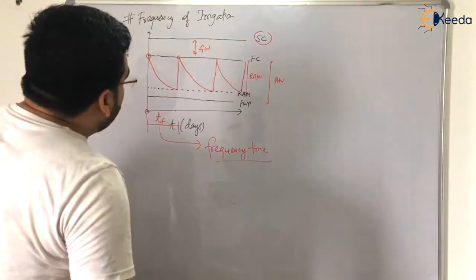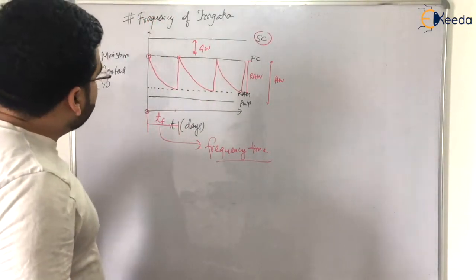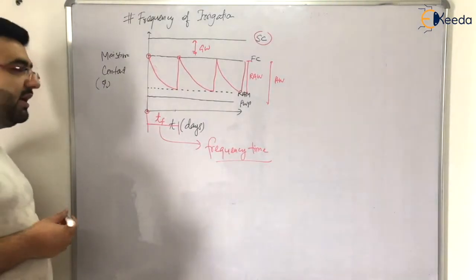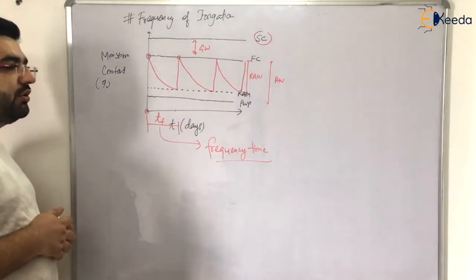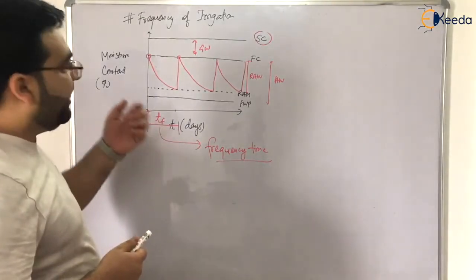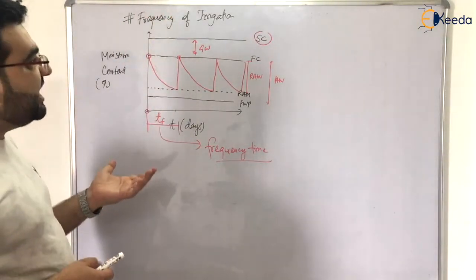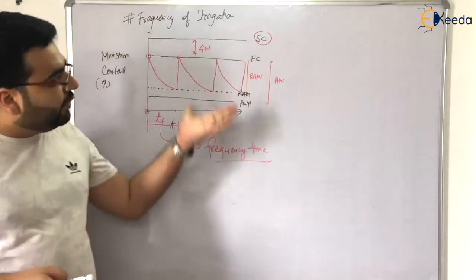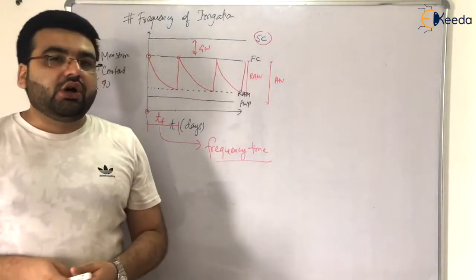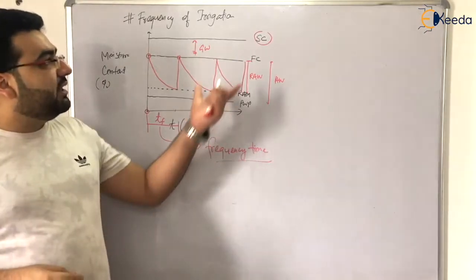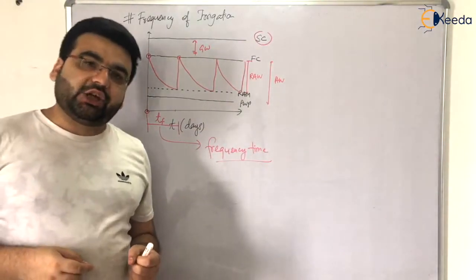I hope you have understood all these topics: saturation capacity, field capacity, permanent wilting point, and frequency of irrigation. Now it's time to implement these concepts and solve some numericals. In the next video, we will be solving numerical problems based on these concepts.